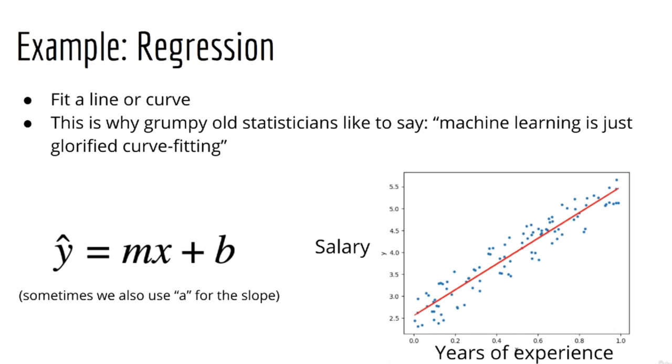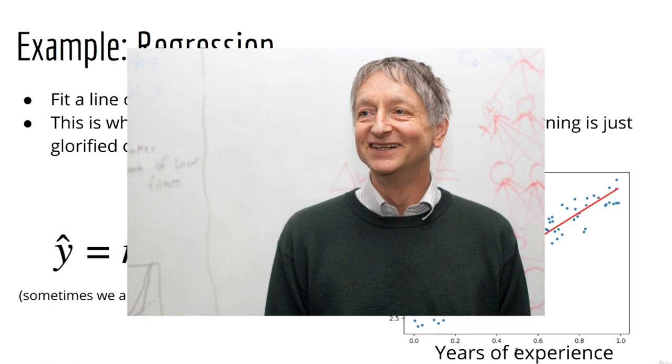Let's start with an example of regression. Regression basically means you are trying to fit a line or a curve. So right away, you understand that this is geometry. Geometry is just lines, planes, curves, circles, and so forth. That's why you'll sometimes hear grumpy old statisticians say things like, machine learning is nothing but glorified curve fitting. By the way, if you are a grumpy old statistician, then you're probably going to be offended by everything we do. You can take this up with Jeffrey Hinton.